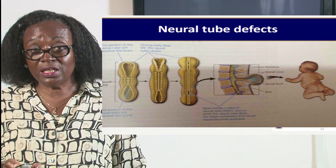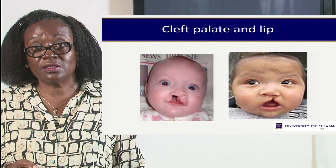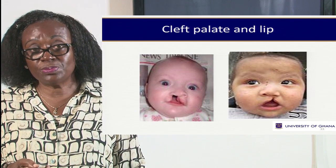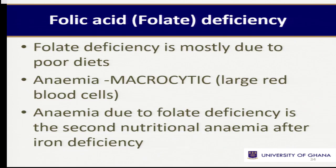Cleft lip and palate — you've seen these on TV and in newspapers where people solicit funds. But our common boko boko, ademe, gbema, akboma, kontomre, and alefu can help prevent these things from happening. We need to encourage our teenagers and pregnant mothers to eat a lot of greens to overcome these challenges.